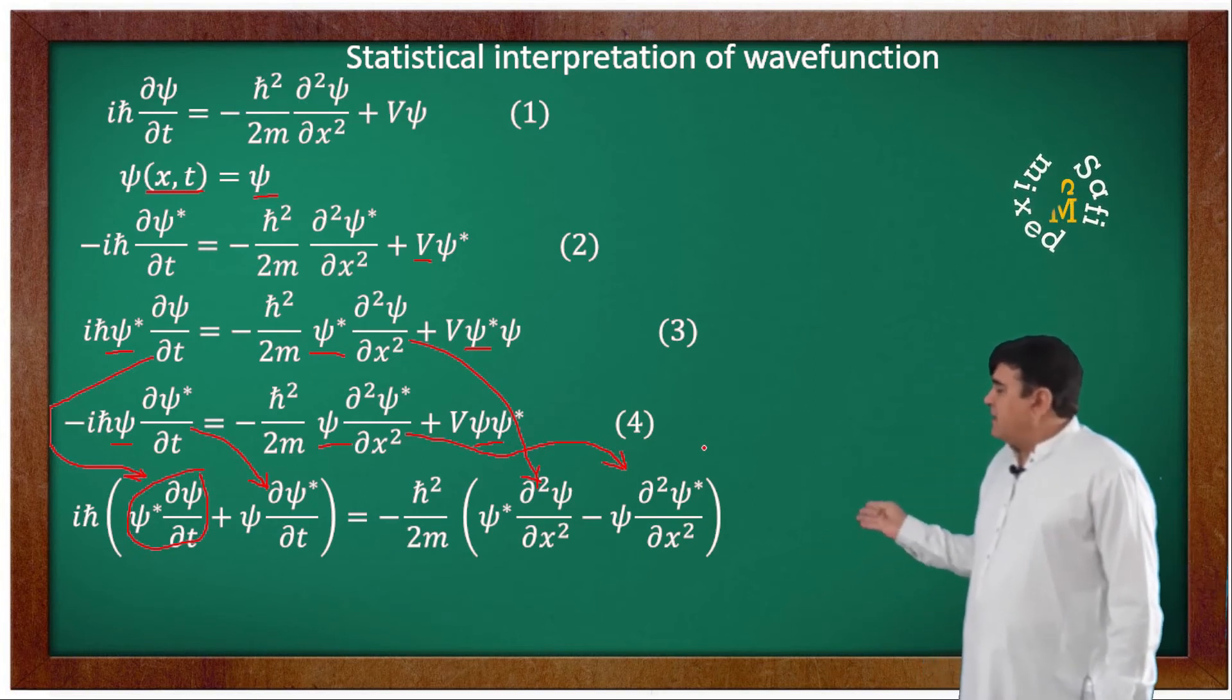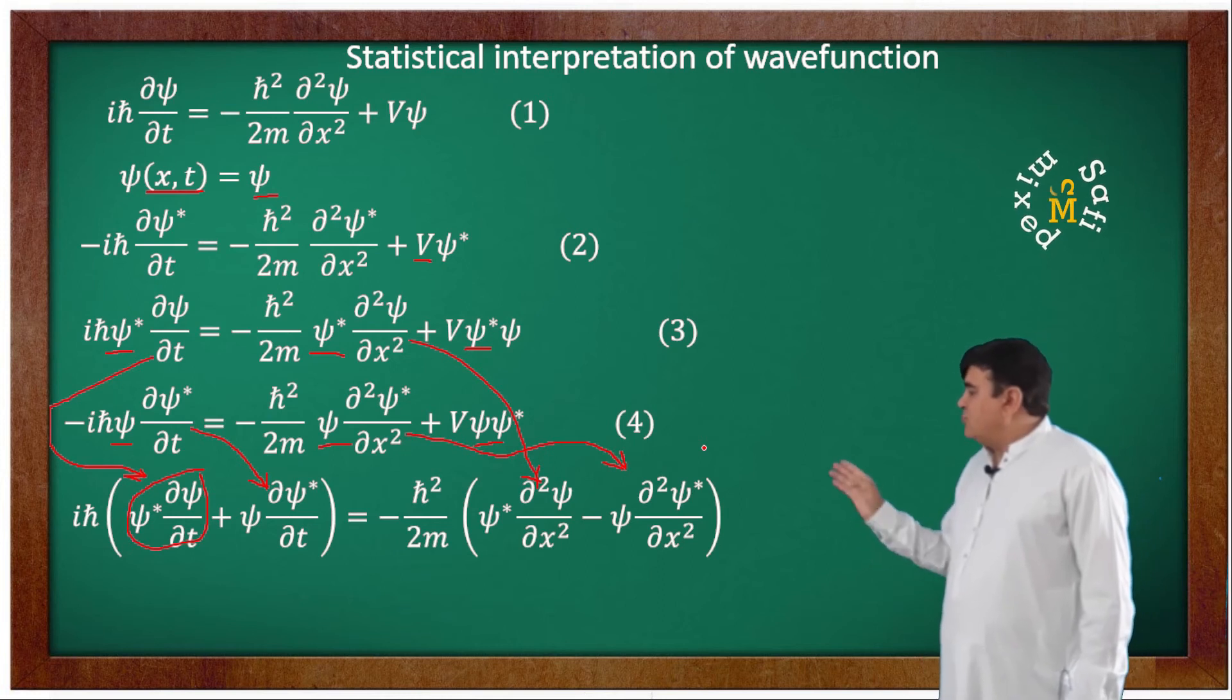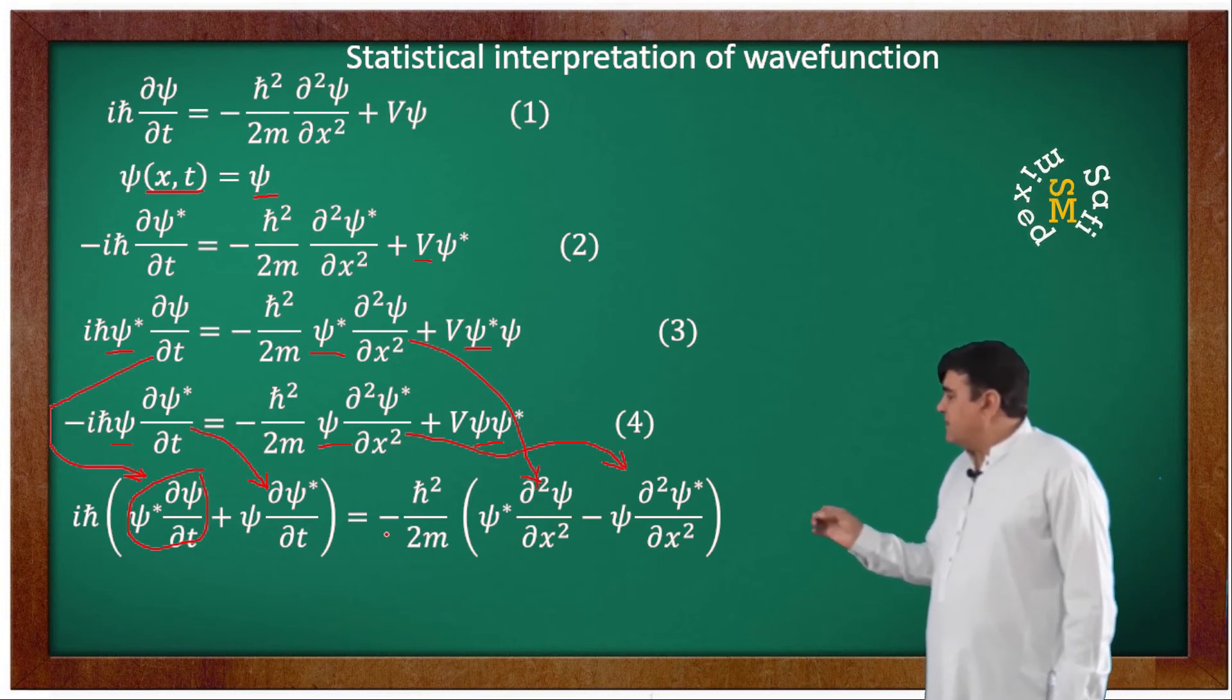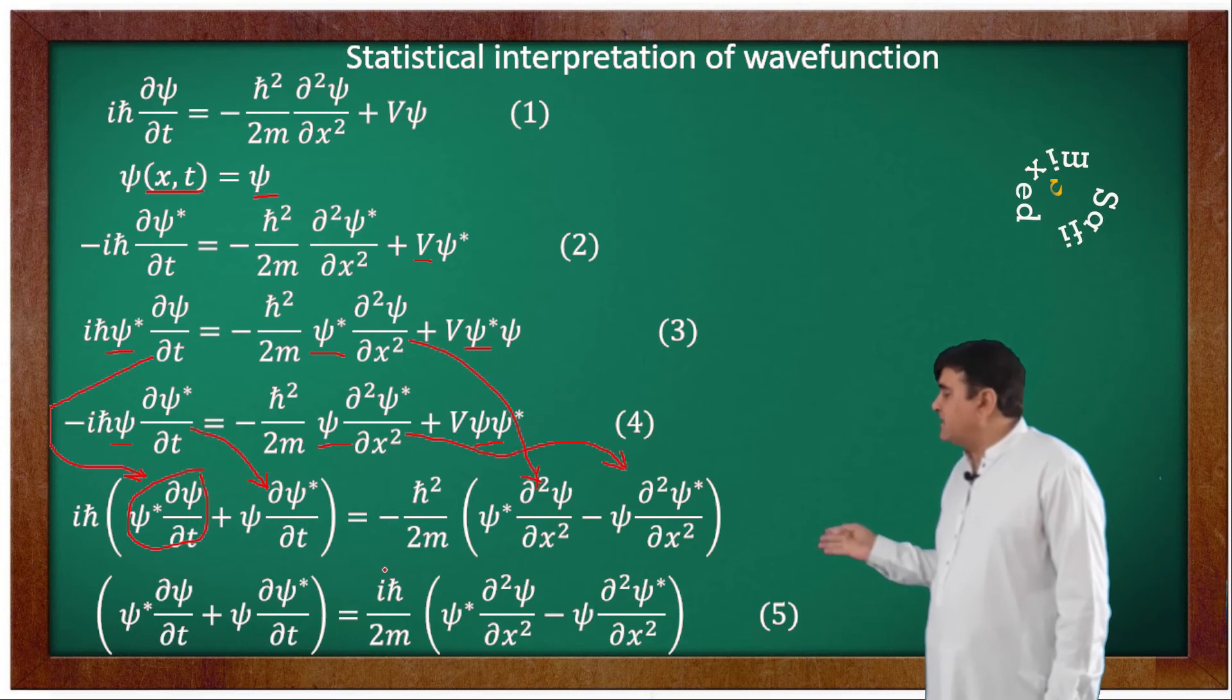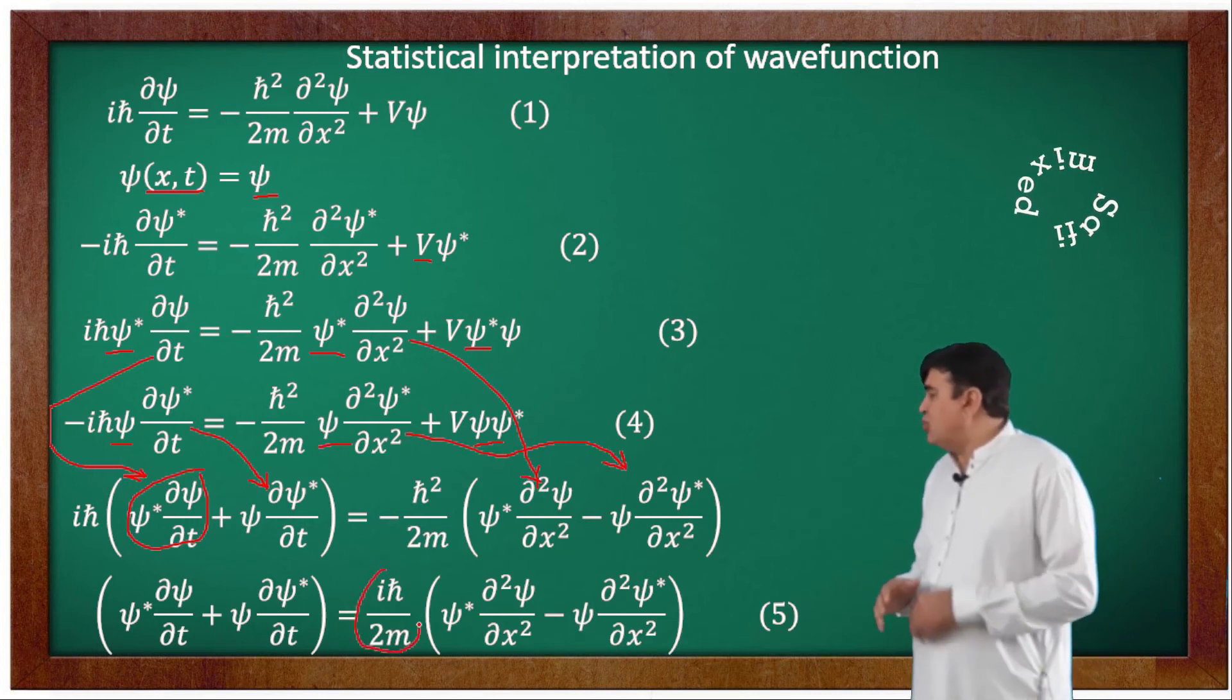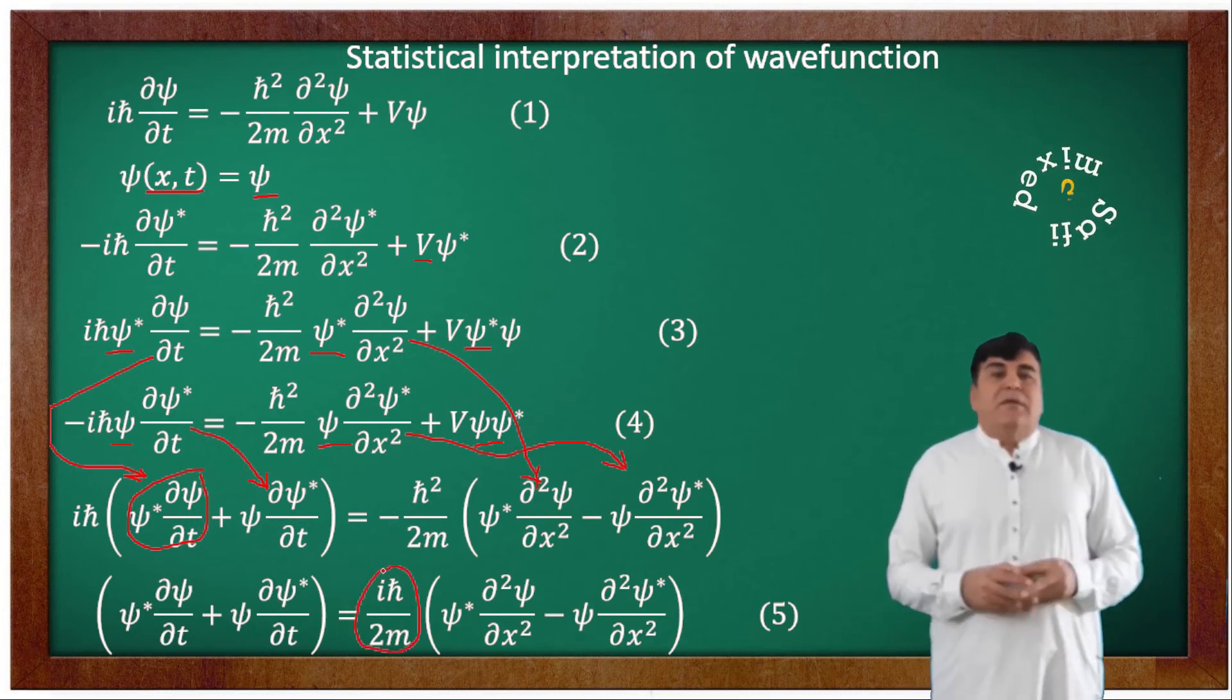And if I take iota h-bar from the left side to the right side, it cancels the square of h-bar square and multiplying and dividing with iota, the right side will cancel the minus sign and would take iota to the numerator of the equation.